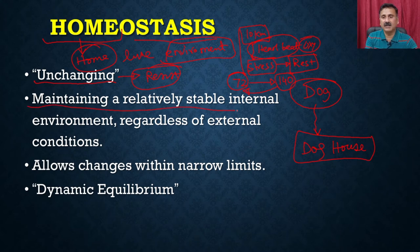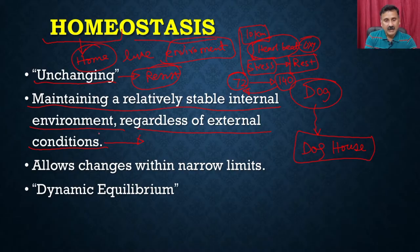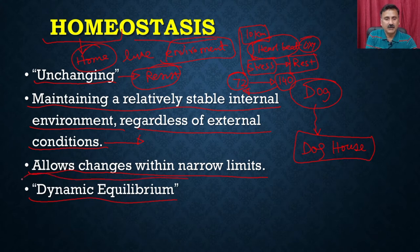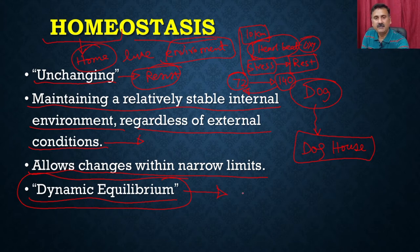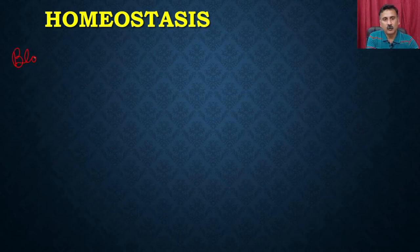The body allows changes within a narrow limit and is under dynamic equilibrium. To understand this phenomenon, let us take an example of blood glucose. Suppose you have taken a bite of pizza. The pizza is made up of bread, oil, and cheese. From the bread you get glucose, from the oil you get fatty acids, and from the cheese — which is a protein — you get amino acids. The bread is a polymeric carbohydrate giving you glucose. As soon as you have taken the pizza, it goes through the process of digestion.